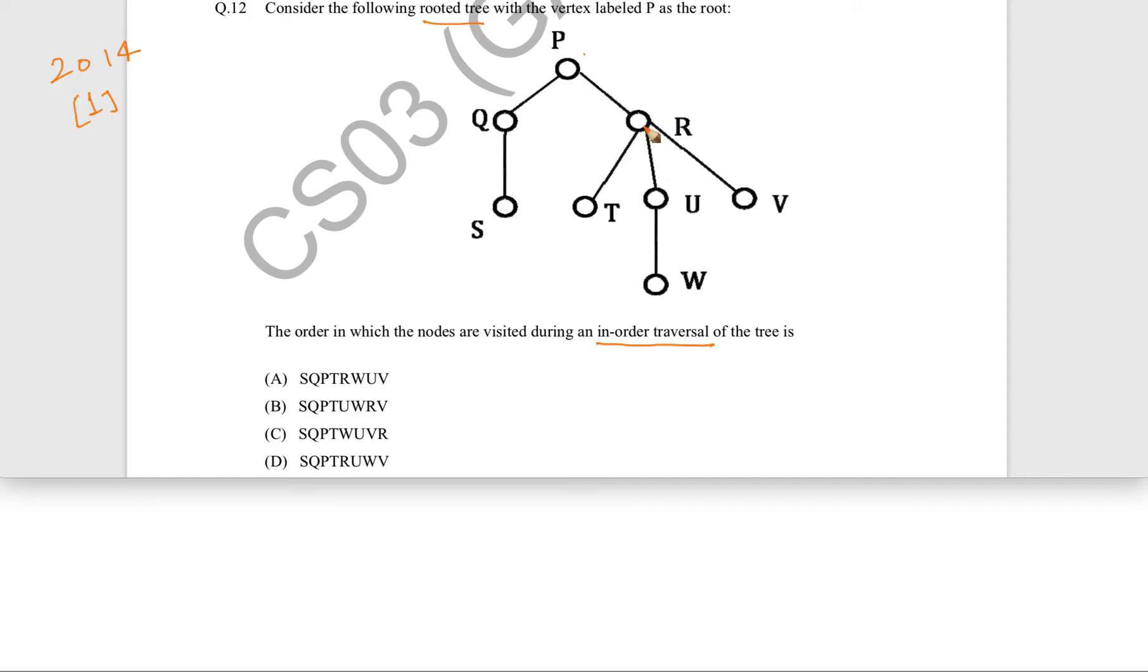So we can see that for R, there are not only two children, rather there are three children. So for a ternary tree, what is the in-order traversal meaning? That itself is the point to be asked.